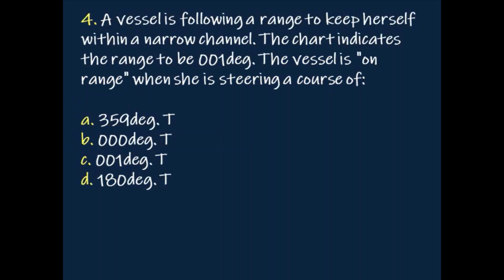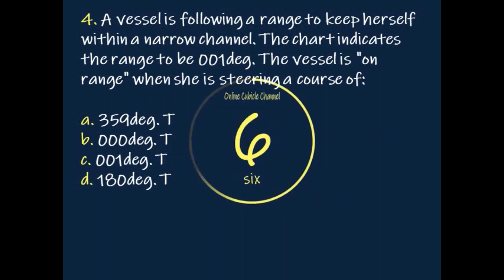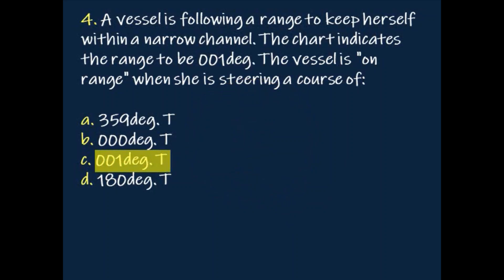Question: A vessel is following a range to keep herself within a narrow channel. The chart indicates the range to be 001 degrees. The vessel is on range when she is steering a course of 001 degrees true.